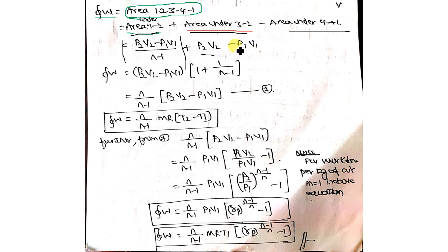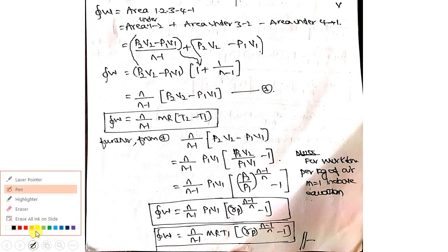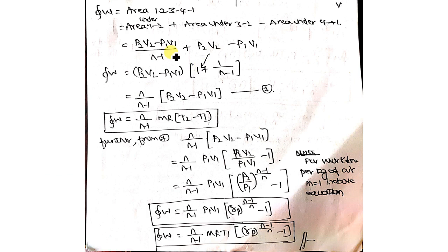Taking P2V2 minus P1V1 as common factors, what remains is one plus one divided by (n-1). Reshuffling gives the work done expression in terms of P2V2 minus P1V1. This can be rewritten using the ideal gas equation: P2V2 = mRT2 and P1V1 = mRT1. Substituting, you get mR(T2 - T1), since mR is common, giving the expression in temperature form.